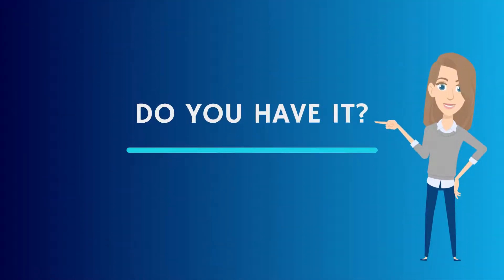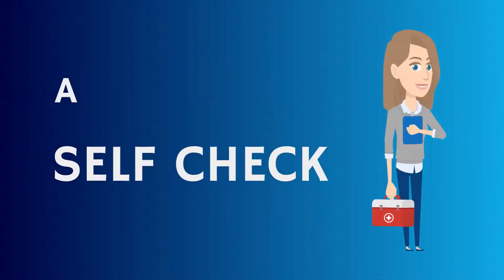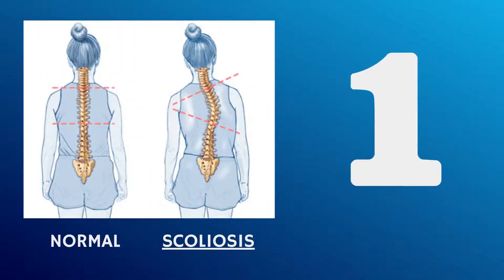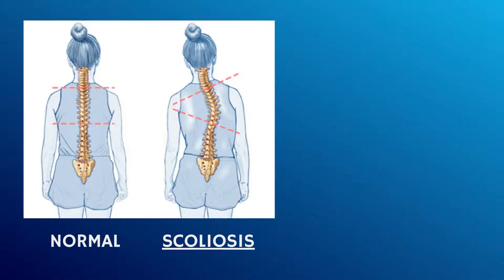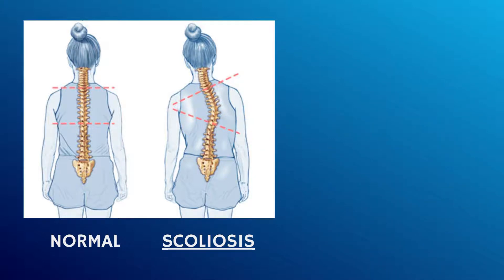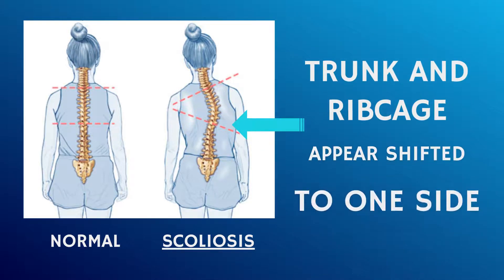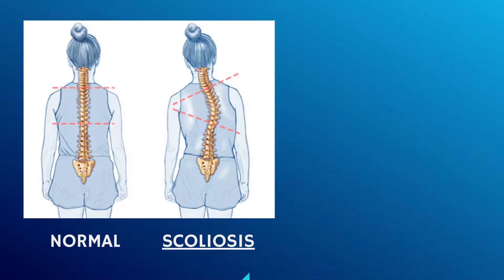How do you know if you've got scoliosis? Scoliosis can be detected at an appointment with your doctor or through a self-check. Signs of scoliosis include: the head appears to be off-centred between the hips; one shoulder appears higher than the other; one shoulder blade is more prominent than the other; the trunk and ribcage appear shifted to one side; the waist appears asymmetrical; one hip appears lower than the other.